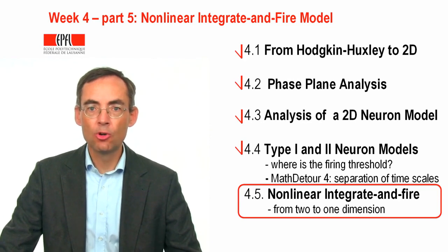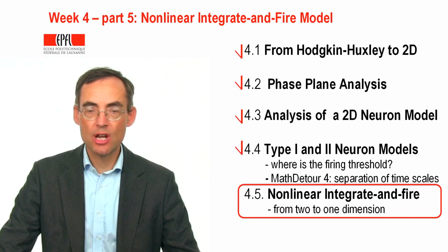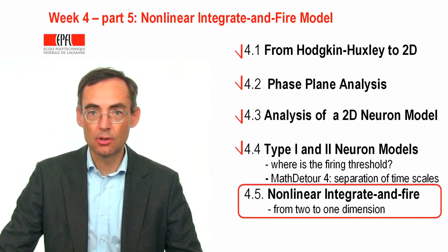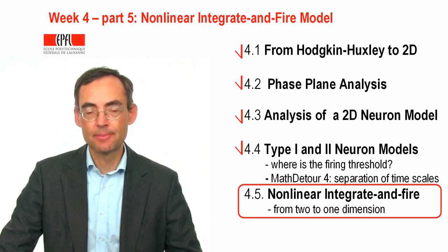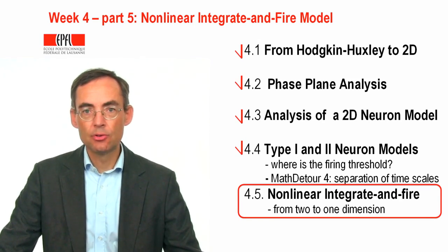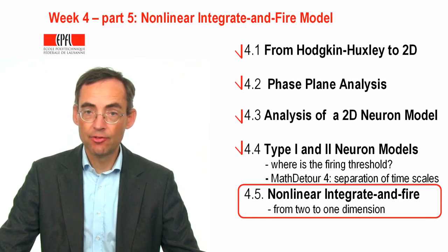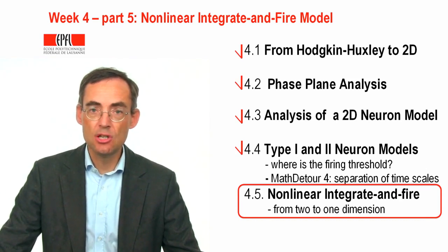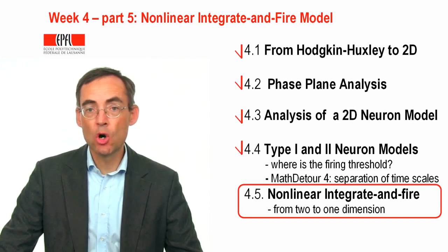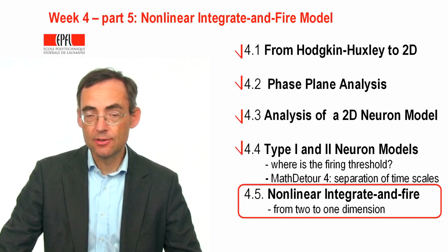This has been a long series of lectures to teach and to watch. This is the final lecture of week 4 of the class Neuronal Dynamics. I will use this final lecture to make a transition from the two-dimensional neuron models to the nonlinear integrate-and-fire type models that we have seen in week 1. This is important because it is with these reduced models that we will work for the following two or three weeks.